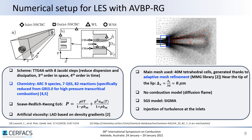For the numerical setup, I will highlight just two key parameters. The first is the chemistry model: we used a mechanism derived from the GRI3.0 mechanism, containing 9 species, 7 quasi-steady-state species, and 82 reactions. This mechanism was specifically derived and reduced for the conditions encountered in liquid rocket engine combustion, and can be downloaded freely at the address shown. The second point is the mesh, which contains 14 million tetrahedral cells and was generated using an adaptive mesh refinement strategy with the MMG3D library.